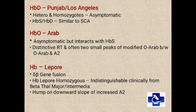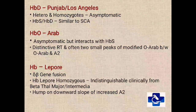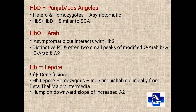Among other common hemoglobin variants, we have HbD Punjab, also known as Los Angeles. The hetero- and homozygotes are asymptomatic, but the clinical importance lies in its combination with hemoglobin S, which has features similar to sickle cell anemia — even HbS heterozygotes having HbD will show the clinical picture of sickle cell anemia. HbO Arab is again asymptomatic but interacts with hemoglobin S, and has a distinctive retention time often with two small peaks of modified O Arab between HbA2 and the O Arab peak.